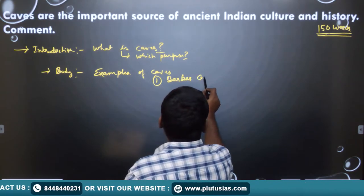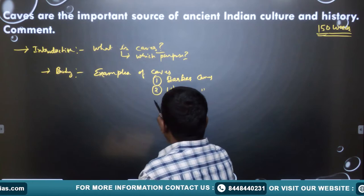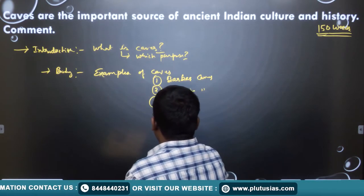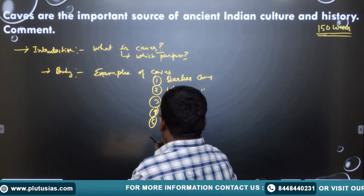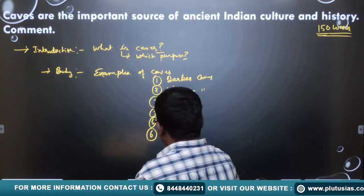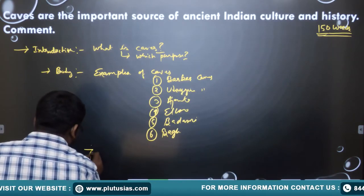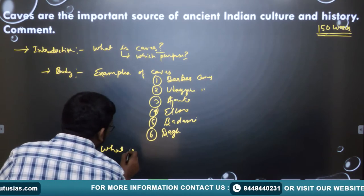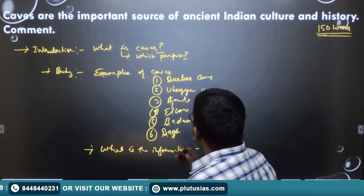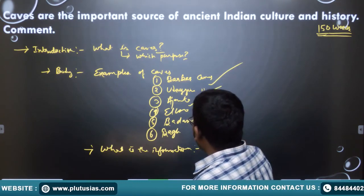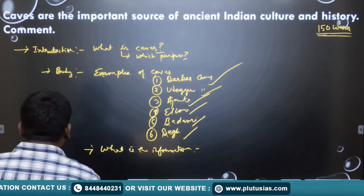Examples to include: Barabar caves in Bihar, Udayagiri caves, Ajanta, Ellora, Badami cave temples, and Bagh caves in Madhya Pradesh. Then we discuss what information and specialties are given in each — Barbara caves, Udayagiri caves, Ajanta caves, Ellora caves, Badami and Bagh caves — and then write a conclusion that caves are a very important source of ancient history and culture.